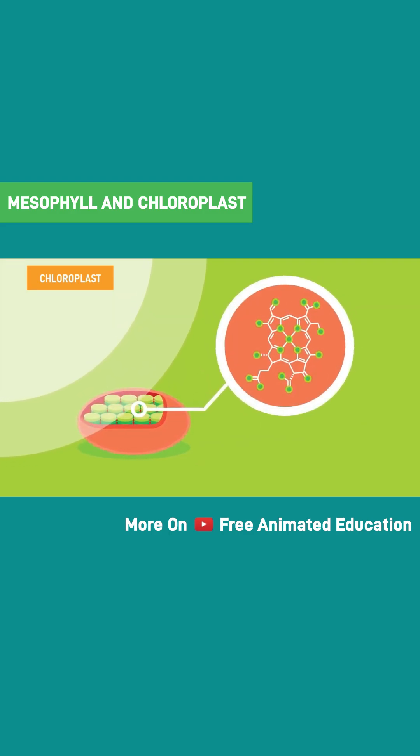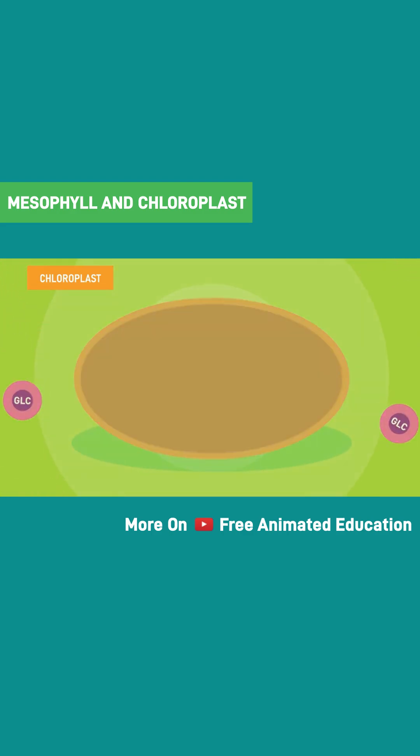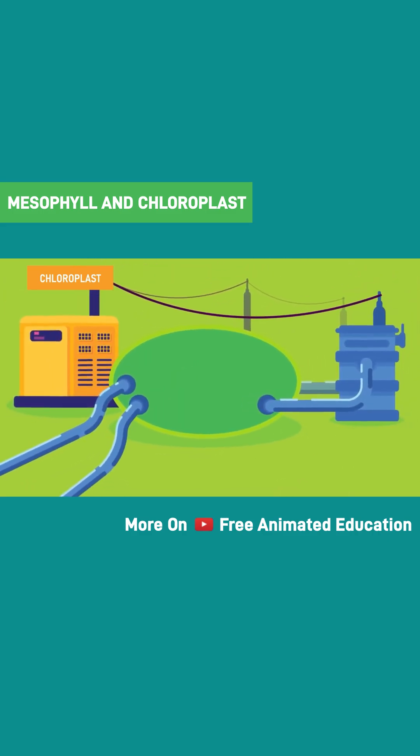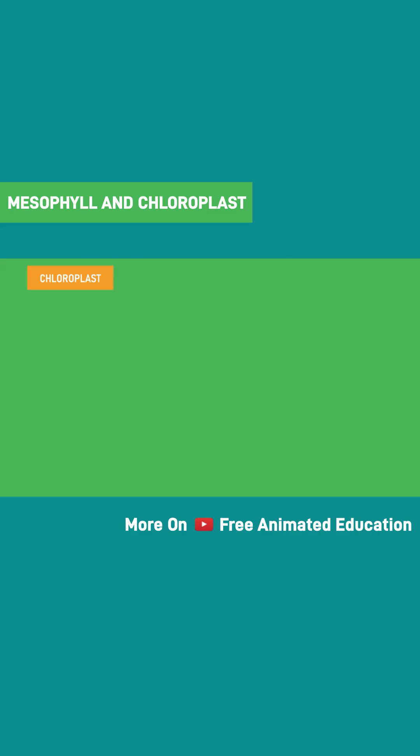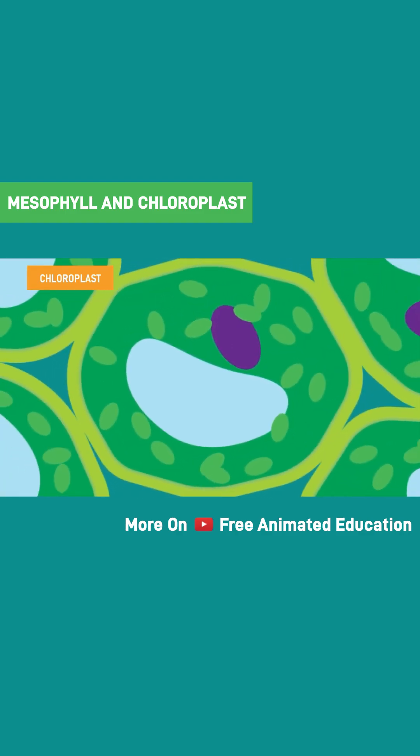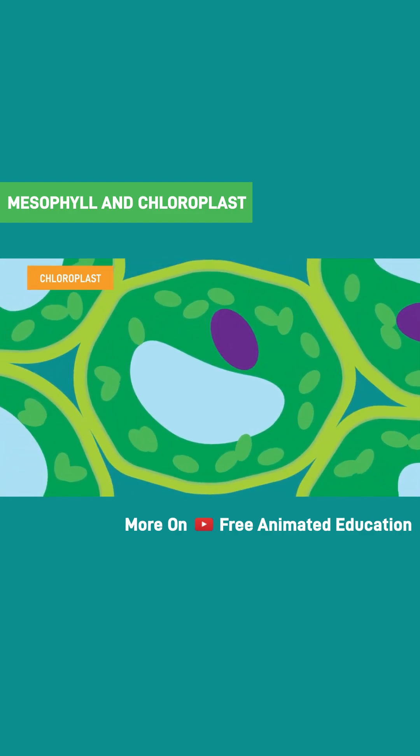This ability to capture energy and produce food earns chloroplasts the title as the powerhouse of the plant. Chloroplasts can be found moving around within the cells of mesophyll. There are usually 30 to 40 chloroplasts per mesophyll cell.